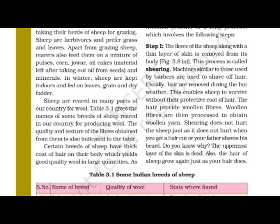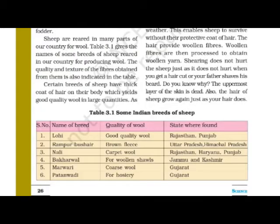Sheep are reared in many parts of the country. Table 3.1 gives the names of some breeds of sheep reared in the country for producing wool, along with the quality and texture of the fibers obtained from them and the states where they are found.